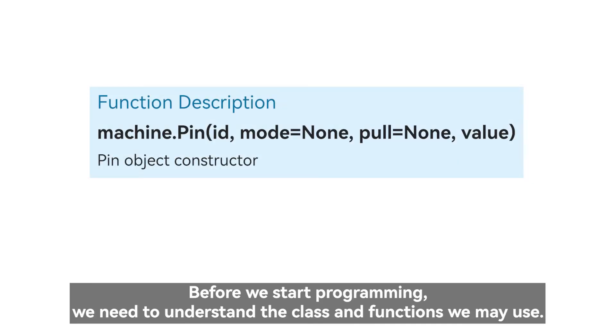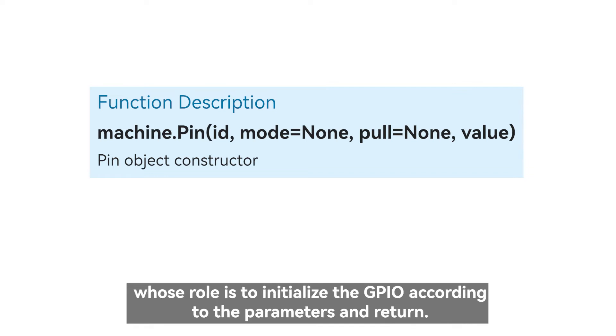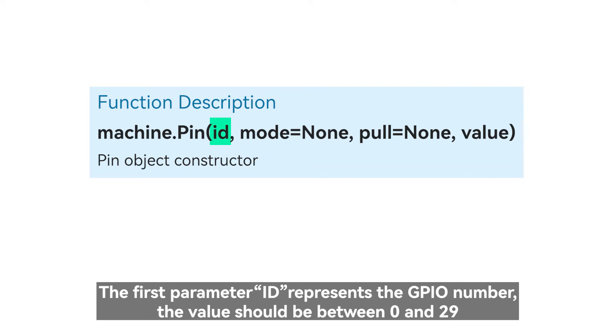Function description. Before we start programming, we need to understand the class and functions we may use. The first thing we see is the constructor function in the machine pin class, whose role is to initialize the GPIO according to the parameters and return.